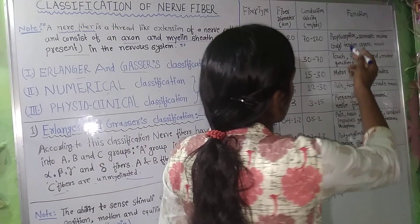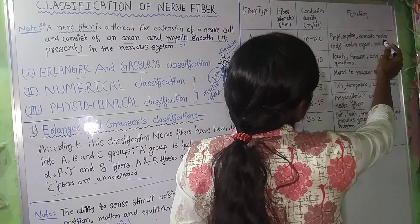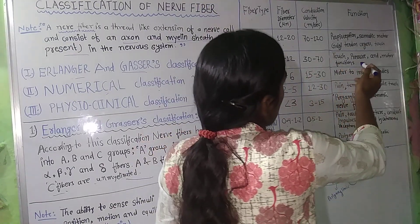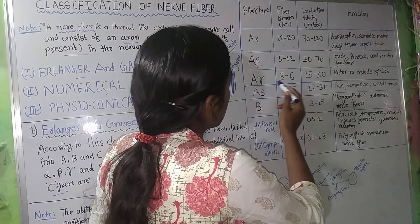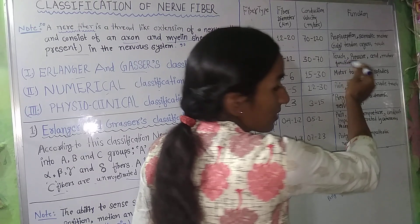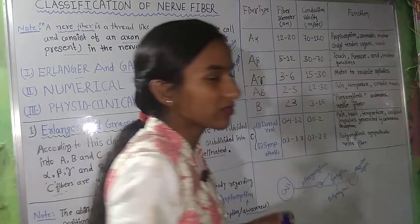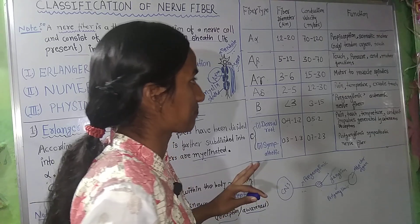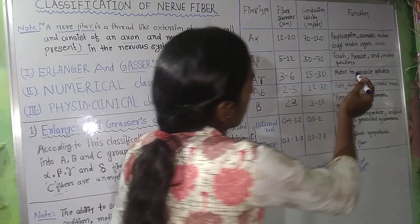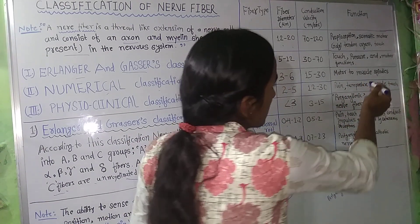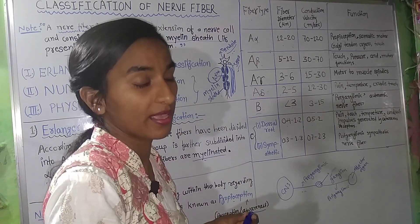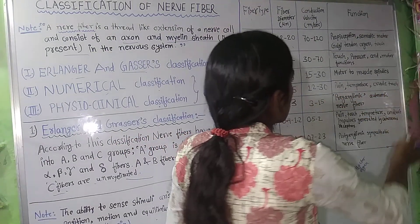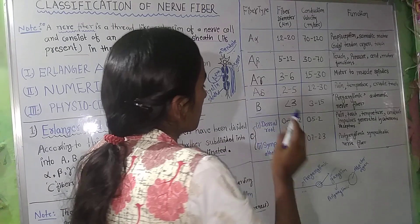A-alpha fibers also serve somatic motor function, Golgi tendon organs, and touch. A-beta fibers carry touch, pressure, and motor functions. A-gamma fibers are motor fibers to muscle spindles. A-delta fibers carry pain, temperature, and crude touch — sensory receptors.